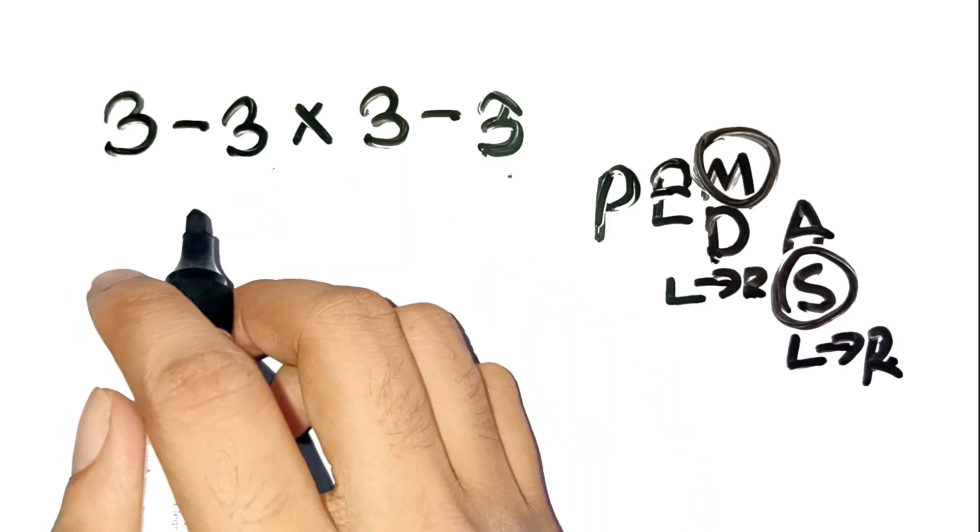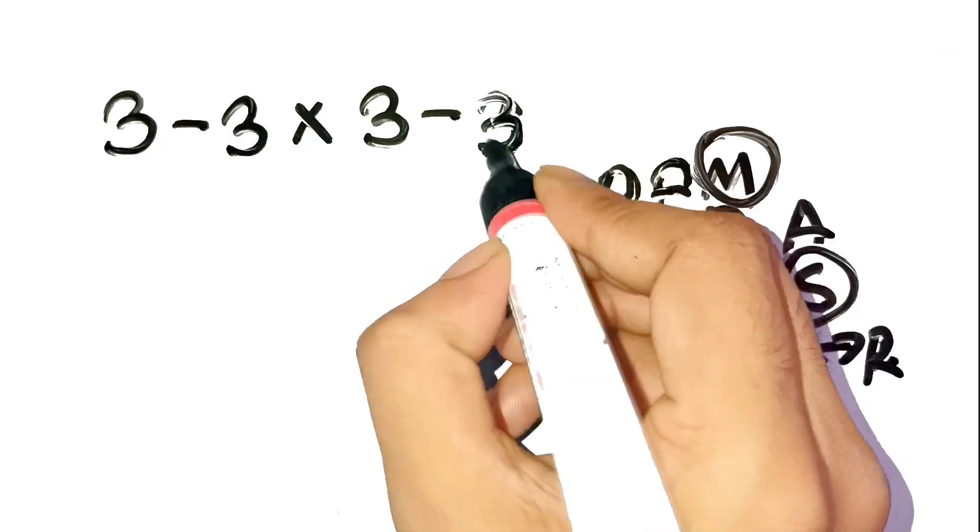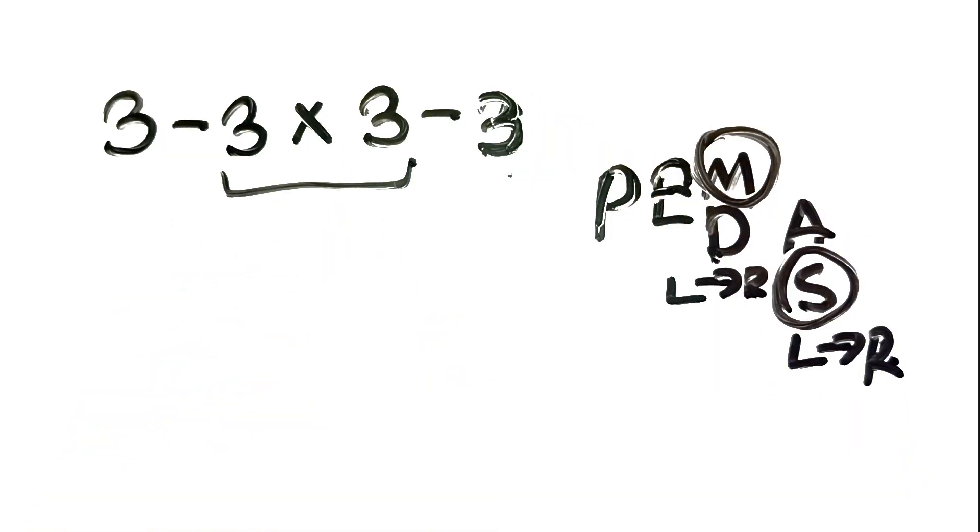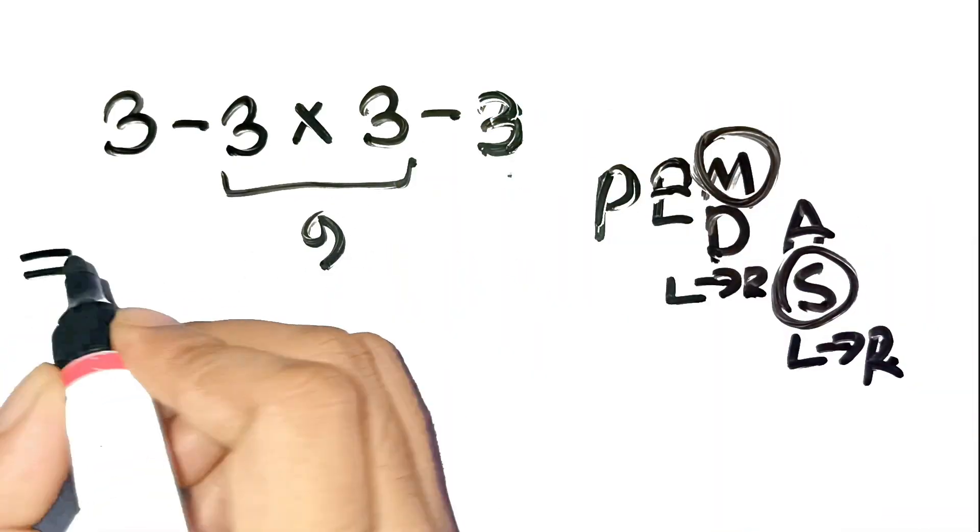Step by step, 3 minus 3 times 3 minus 3. First, do the multiplication. 3 times 3 is 9. Now, the expression reads 3 minus 9 minus 3.